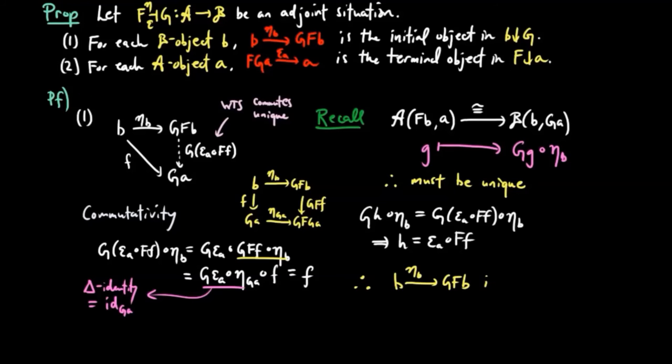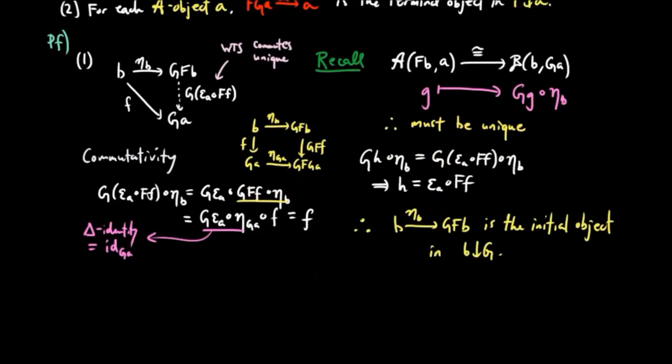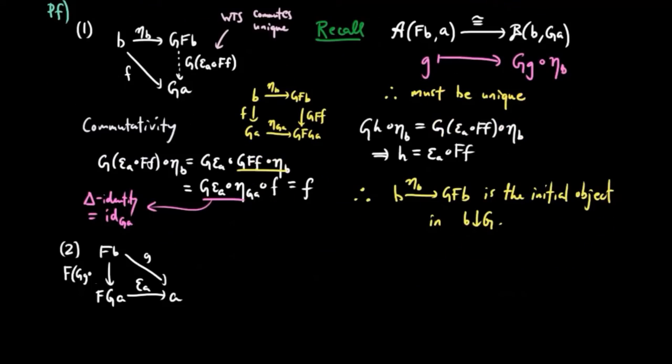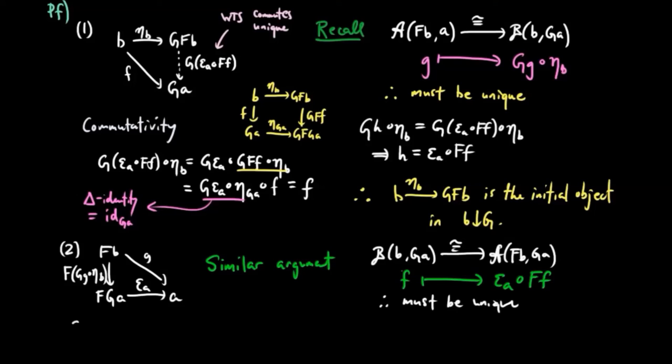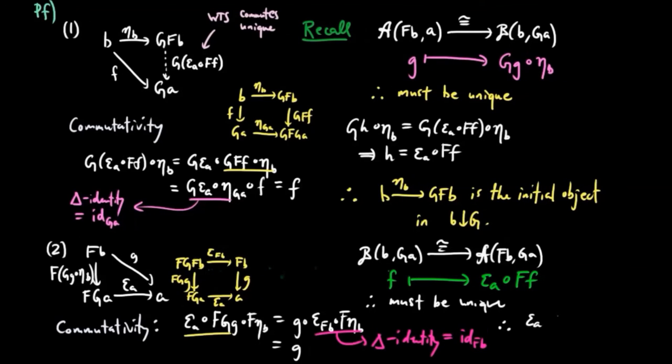Therefore, eta B is the initial object in B over G. For the co-unit, the argument is completely analogous, and we will skip it. You can pause the video to follow the arguments if you'd like. And that completes the proof.